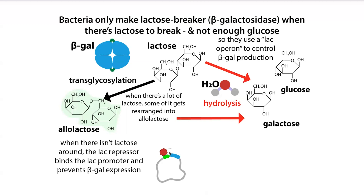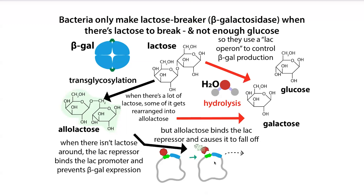Normally bacteria don't want to waste energy making the lactose-breakdown enzyme if there's no lactose around — that'd be a waste of energy. And if there's plenty of glucose around, which they prefer, they're not going to make the protein either. So this lac repressor protein is blocking the site. If we can get the lac repressor to fall off, we can get expression of beta-galactosidase. When there's lactose around, you get some allolactose, and the allolactose binds to the lac repressor, causing it to fall off and leading to expression of beta-gal.